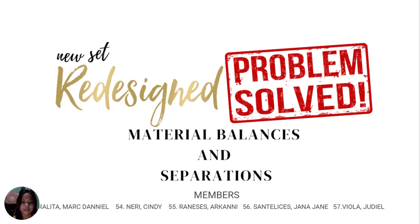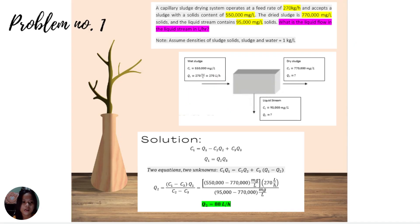New set, redesigned problems on material balances and separations. Problem number one: a capillary sludge drying system operates at a feed rate of 270 kg per hour and accepts a sludge with a solids content of 550,000 mg per liter. The dried sludge is 770,000 mg per liter solids and the liquid stream contains 95,000 mg per liter solids.